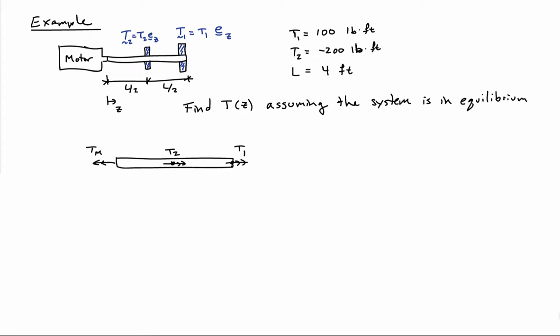The drive shaft has the torque T1 and T2 applied to it, and it has the torque from the motor. We're going to find T of Z assuming the system is in equilibrium. So the first thing I can do is sum the moments about the Z-axis, and that tells me that the torque from the motor is minus 100 foot-pounds. So I can go ahead and redraw my picture here.